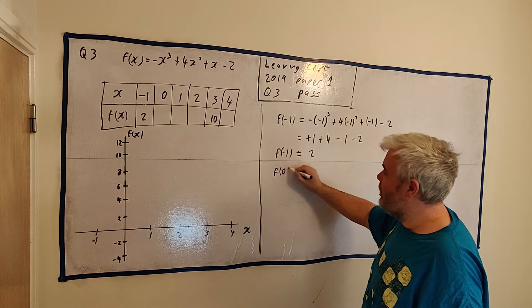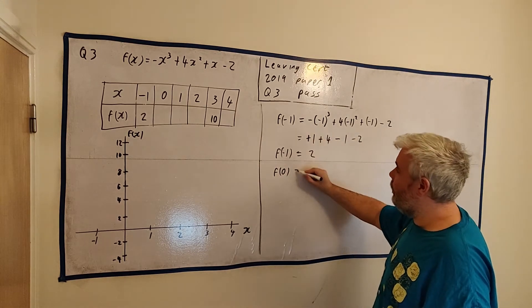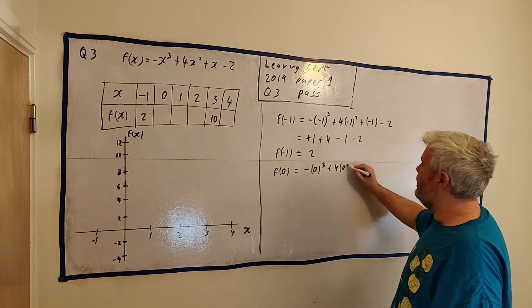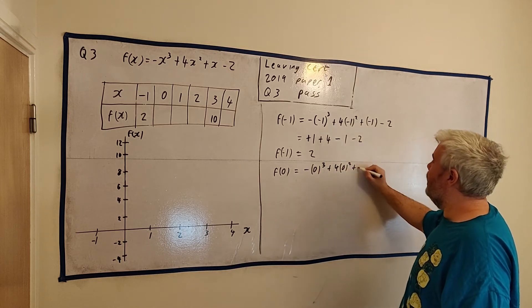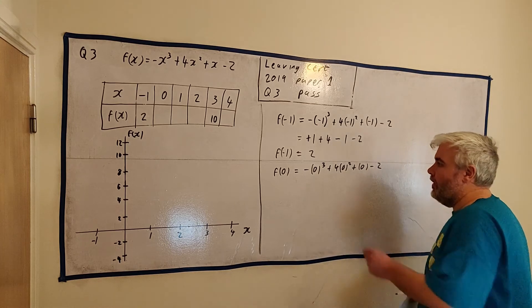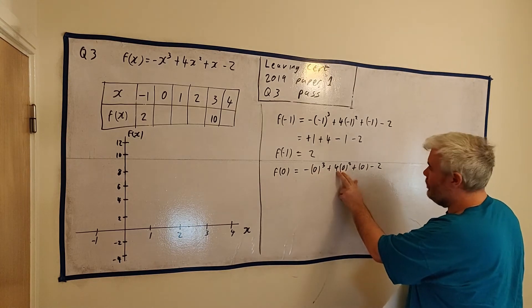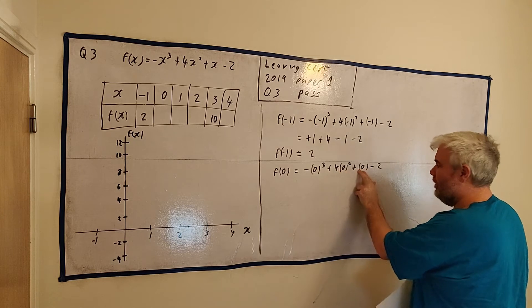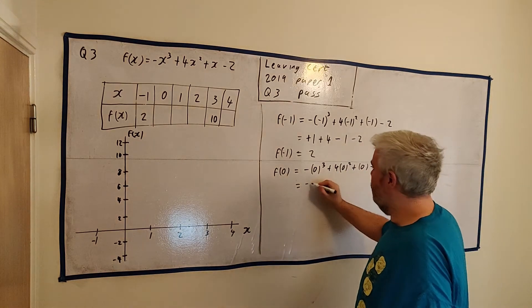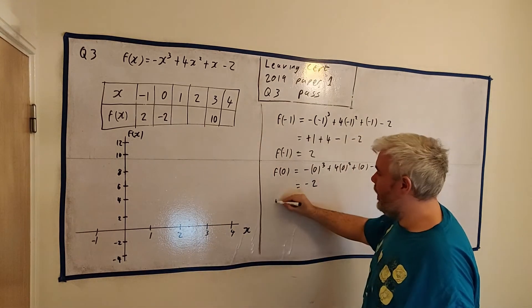The next one is actually quite trivial, but I'll do it the identical way. Minus 0 cubed plus 4 times 0 squared plus 0 minus 2. This is just 0, 0 times 4 is 0, 0 is just 0. That all equals minus 2. So f(0) equals minus 2.